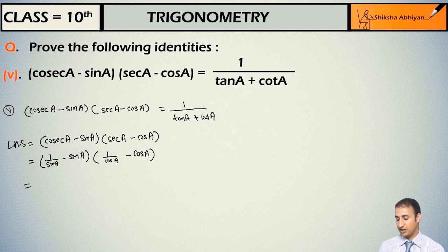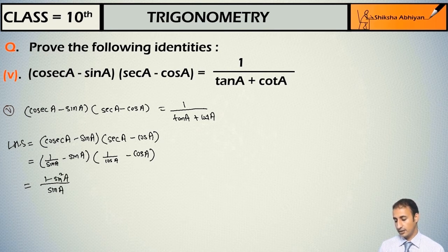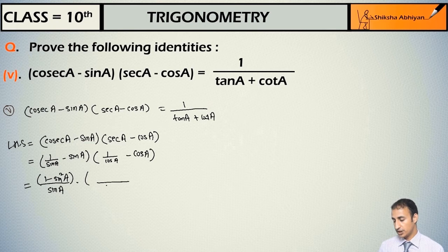Now students, take the LCM. In the first bracket, the LCM will be sin(a), and this will become (1 - sin²(a)) upon sin(a). Multiply it by the second bracket — when you take the LCM, the LCM will be cos(a), and the numerator will become (1 - cos²(a)) upon cos(a).